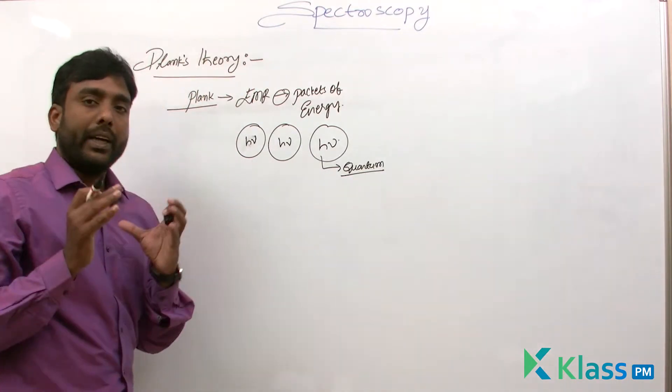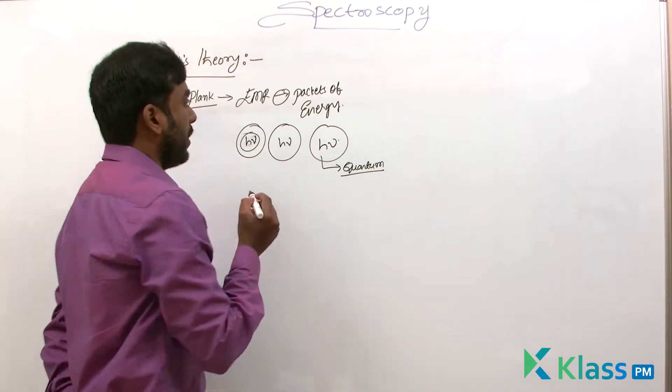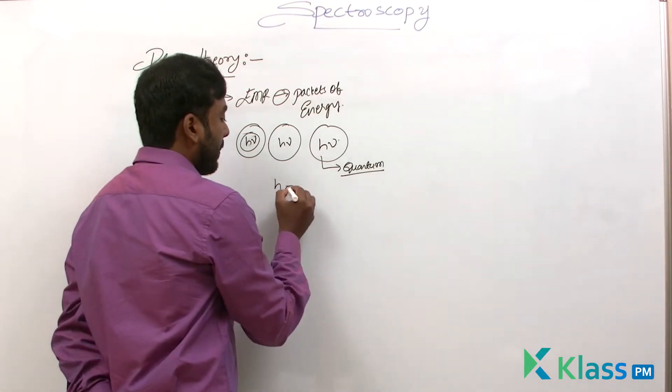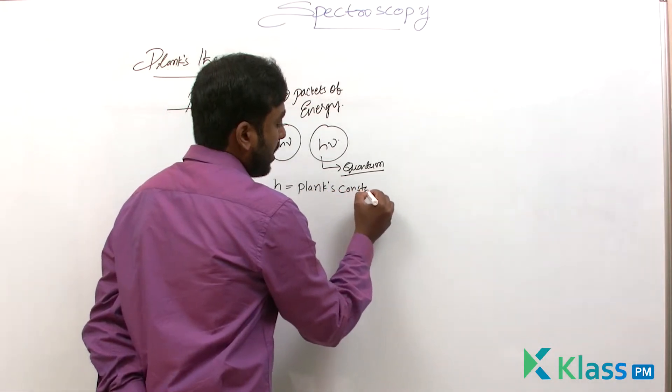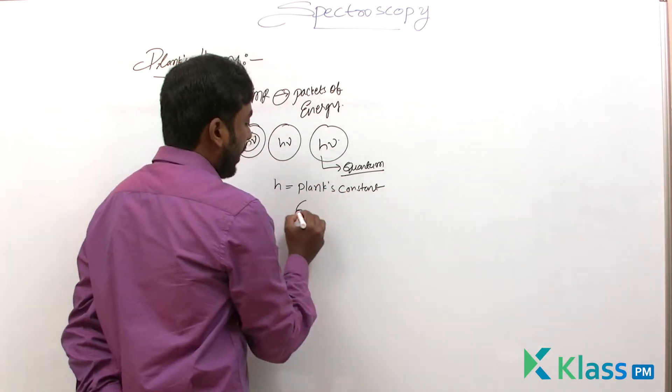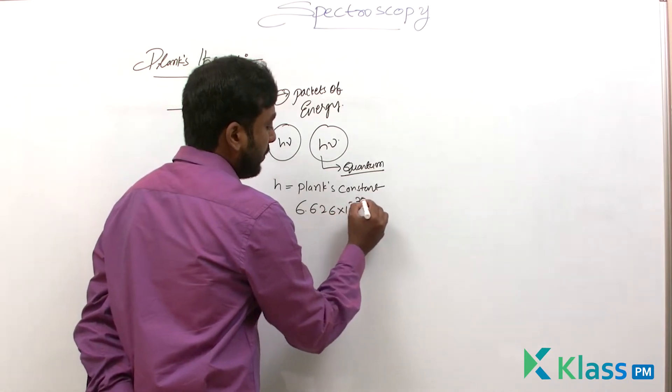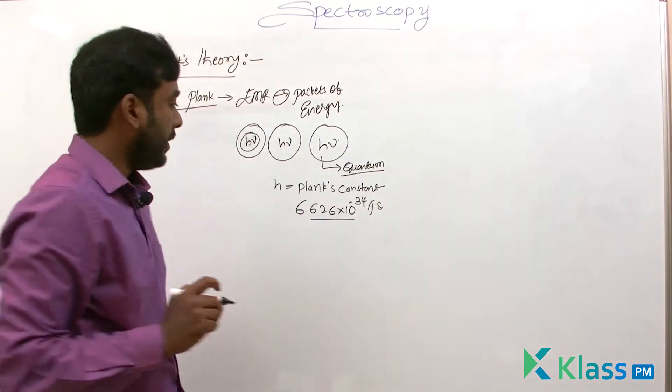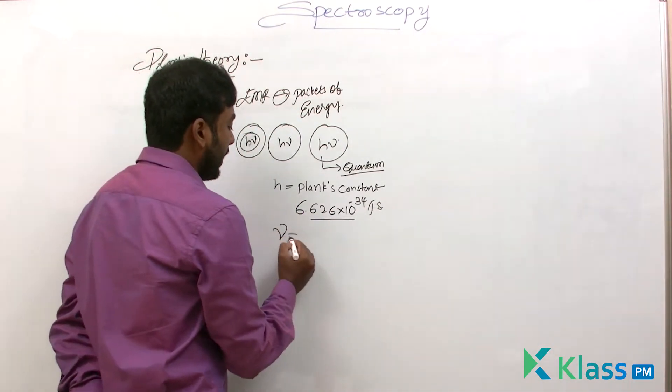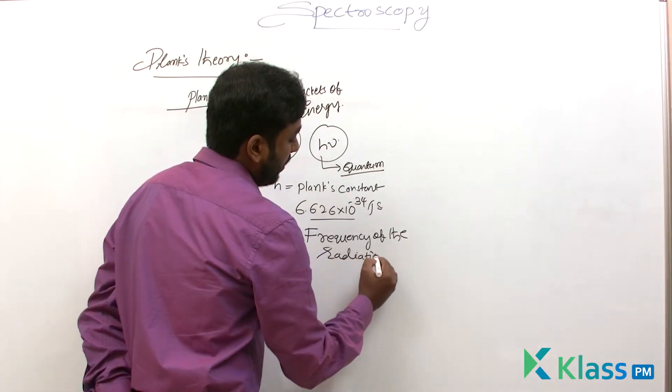So every packet consists of h·ν energy. What is h and what is ν? h is Planck's constant, and its value is 6.626 × 10^-34 Joules·second. So this is Planck's constant, and ν is the frequency of the radiation.